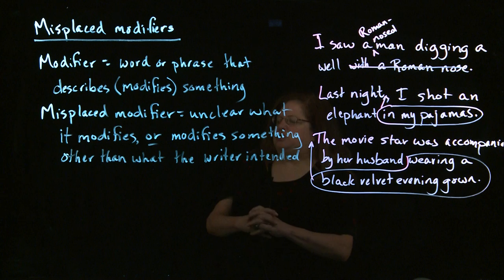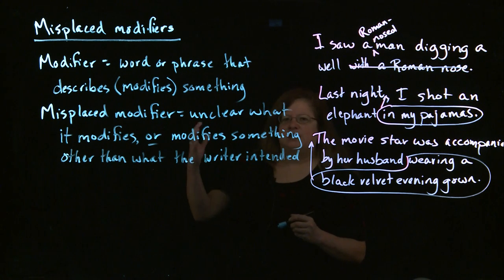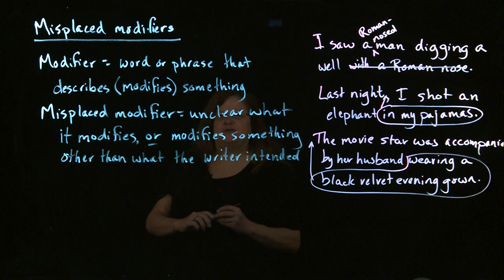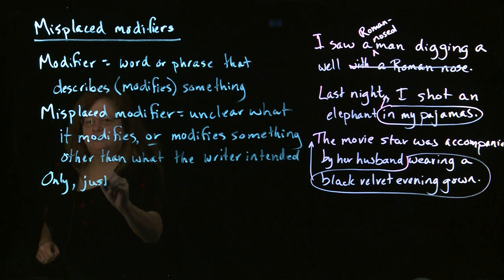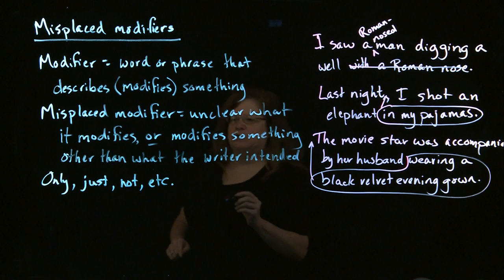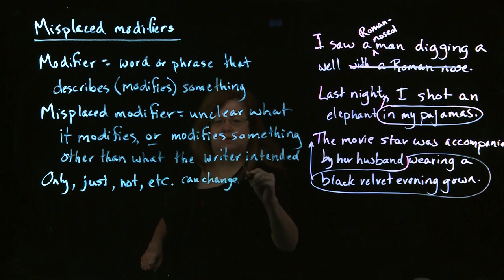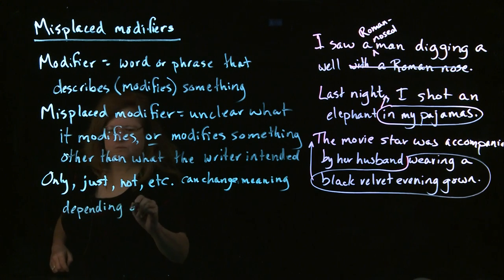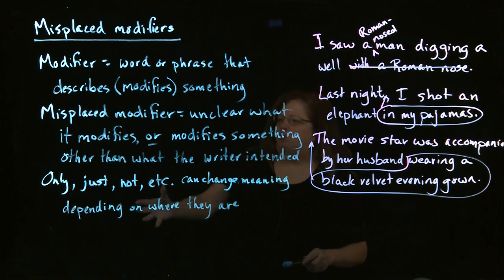Now there's a very special category of modifiers that is especially important to get in the right place. There's a particular category of adverb — and remember, adverb means slippery — known as a restrictive adverb. These are words such as "only," "just," or "not." These adverbs are slippery: they can change the meaning of a sentence depending on where they are. So when you're using one of these particular adverbs, you want to be very picky about exactly where you put it.